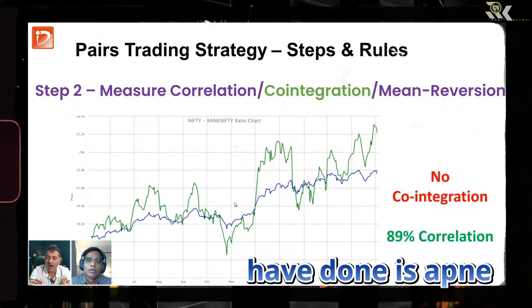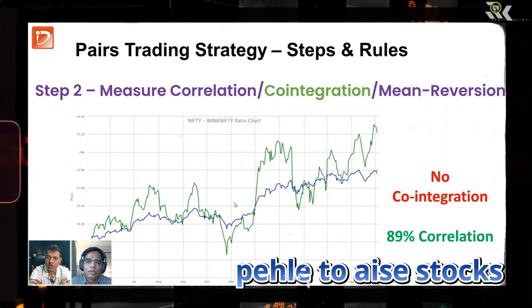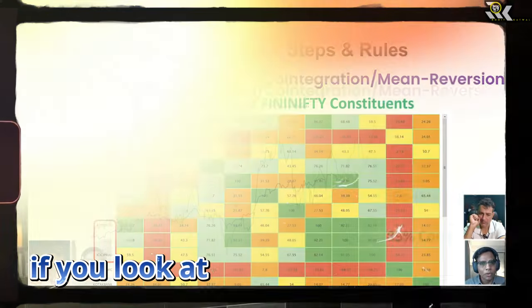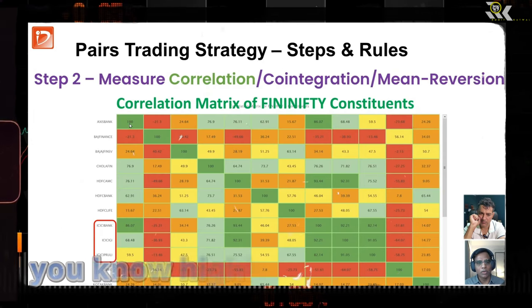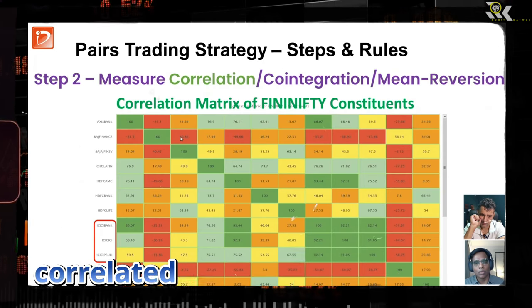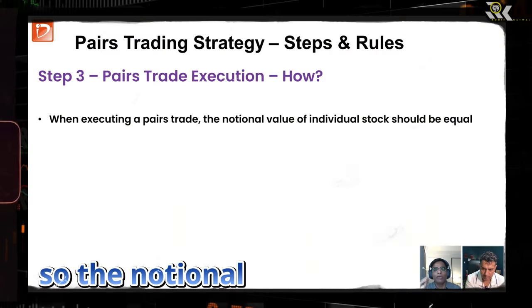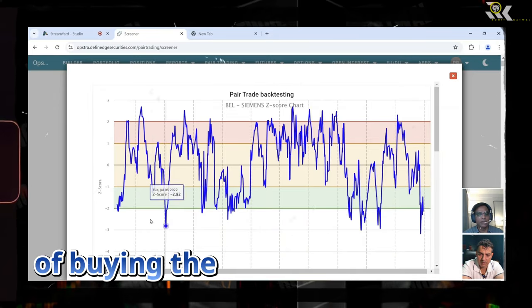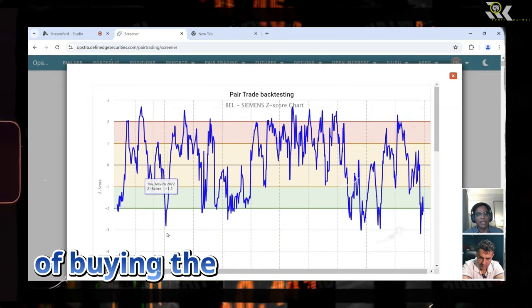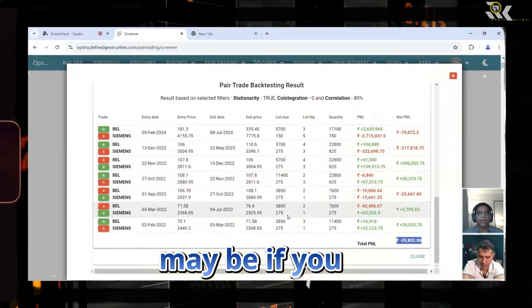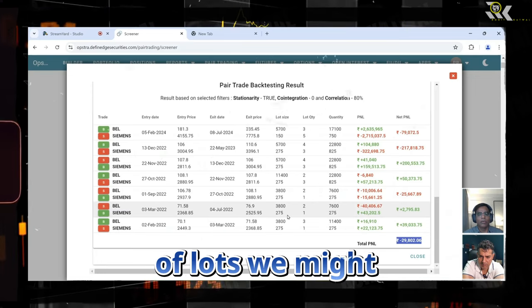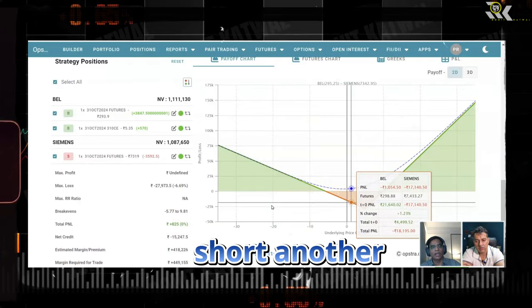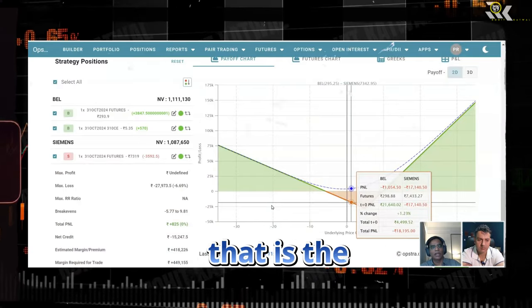You have released such stocks that are highly correlating. Green means highly correlated, red means negatively correlated. The notional value of the individual stock should be equal. Here we are getting these options of buying the pair, shorting the pair. Maybe if we reduce the number of lots, we might have been profitable. Buy one in cash and short another one in futures — that is the best.